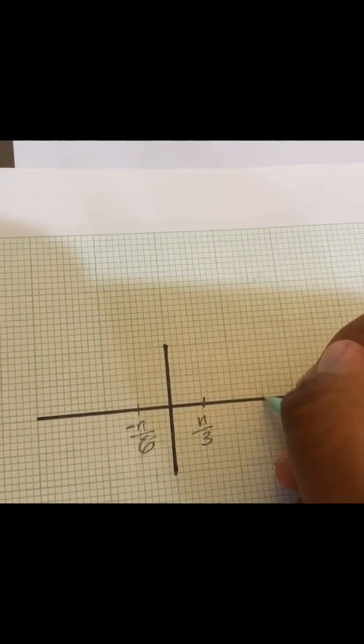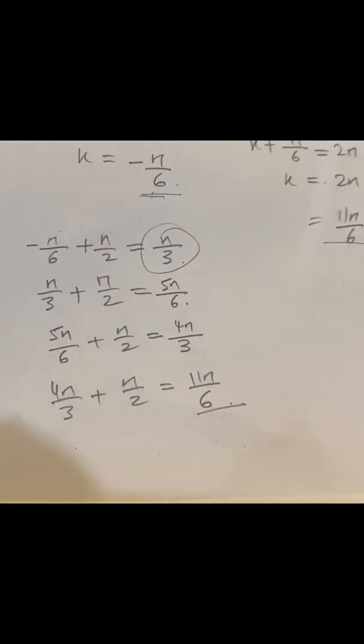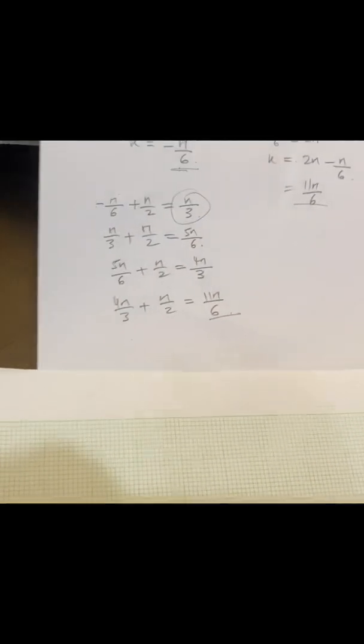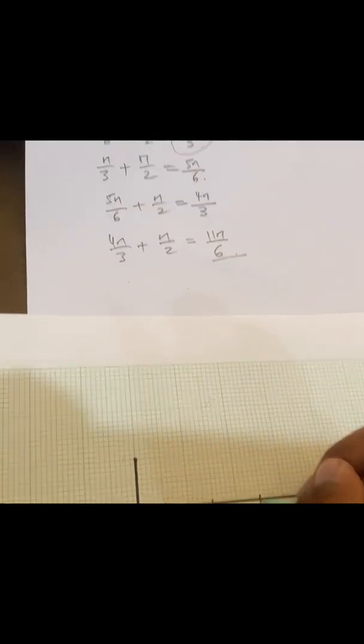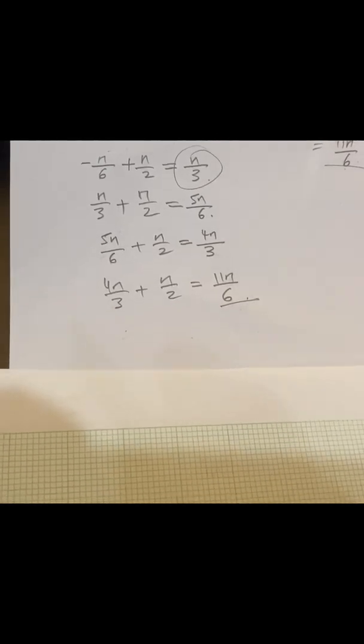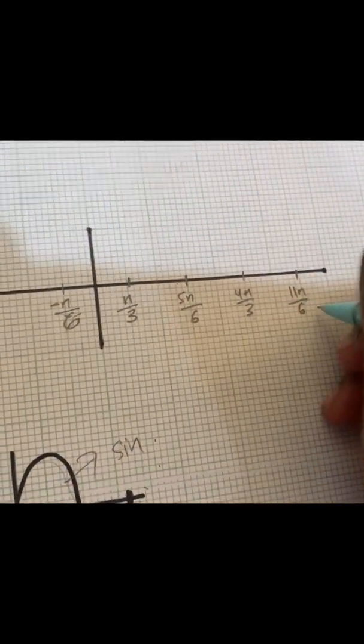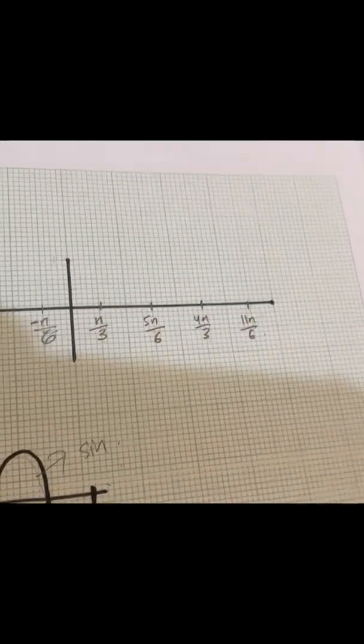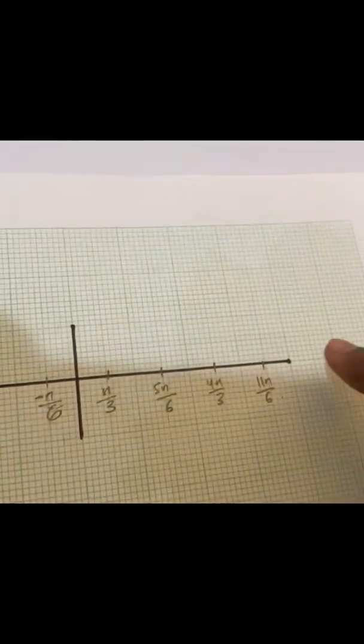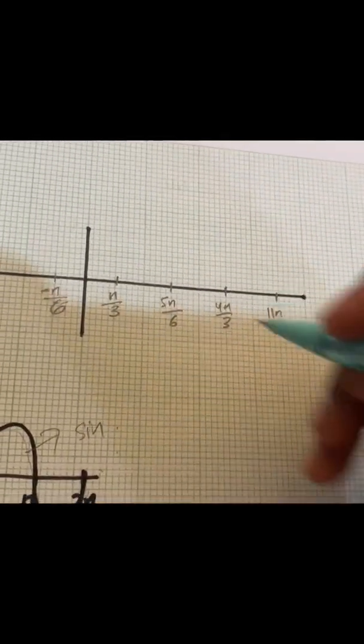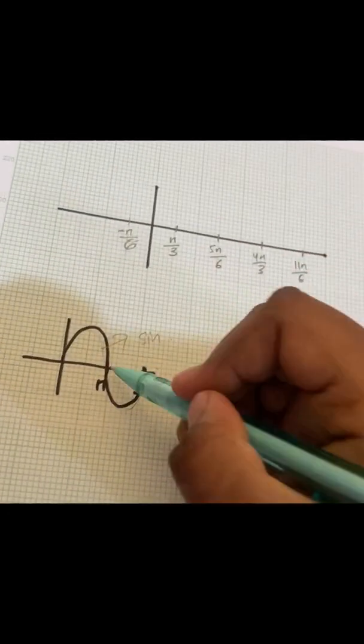Then 11π over 6. Okay, the graph. So here we have five points, so we can find this one like this, one comes here.